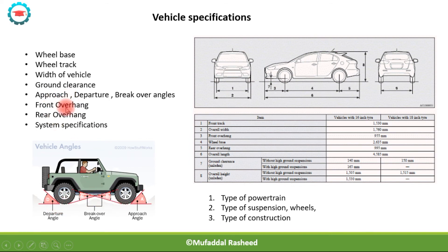Along with these, front overhang and rear overhang are important. As you can see here, the front overhang is the distance from the front wheel to the frontmost point on the bumper, and the rear overhang is from the rear wheel to the rearmost point of the bumper.